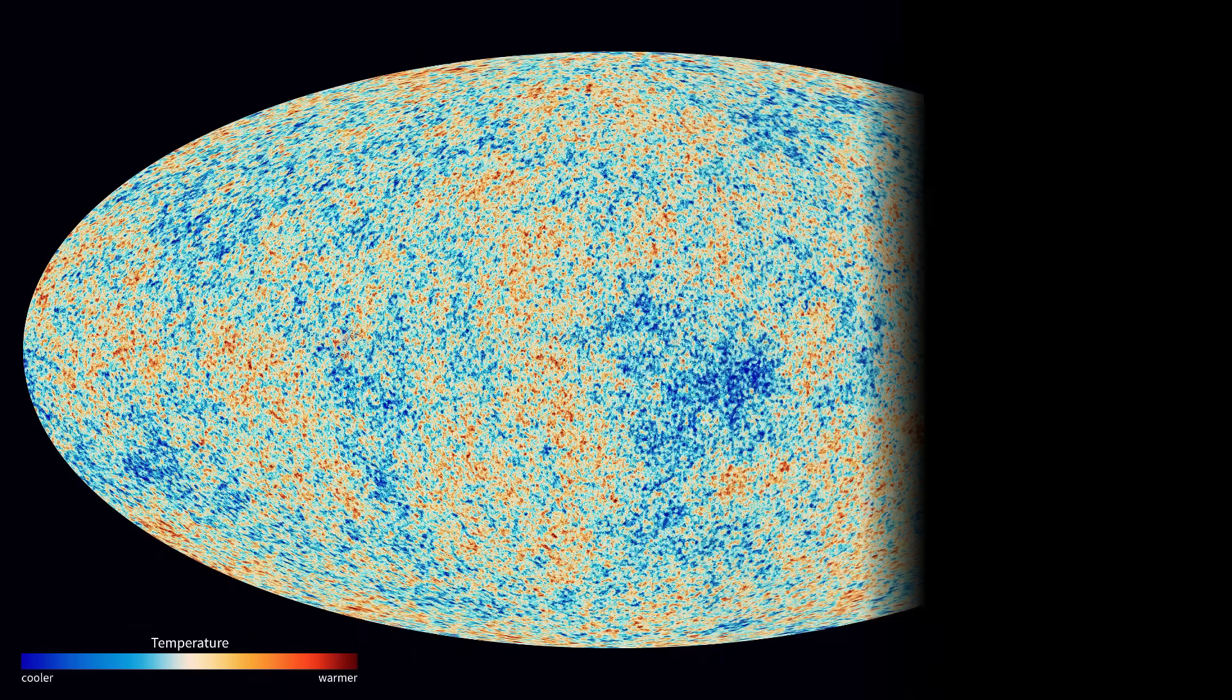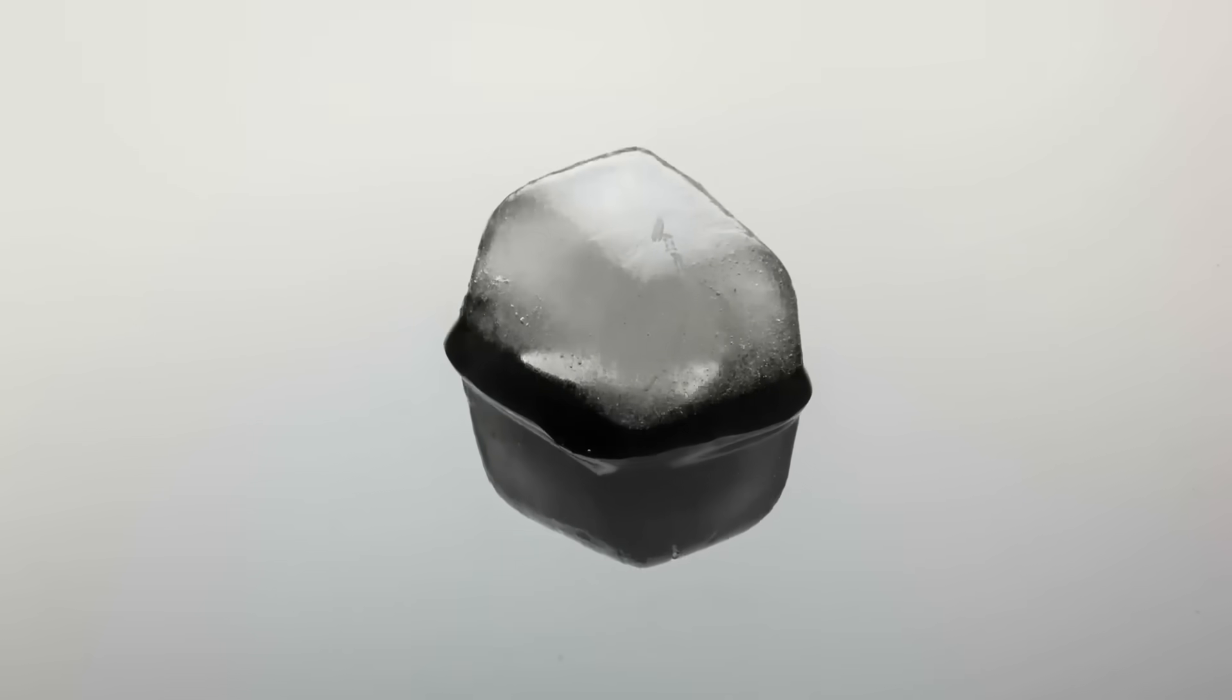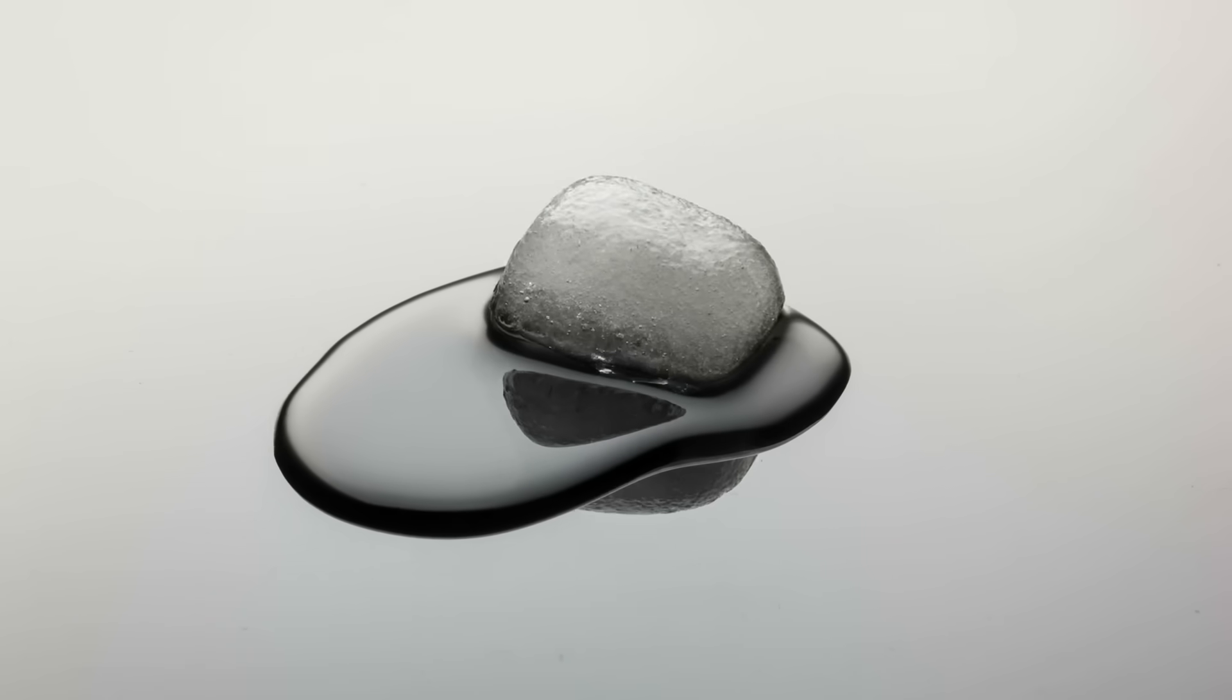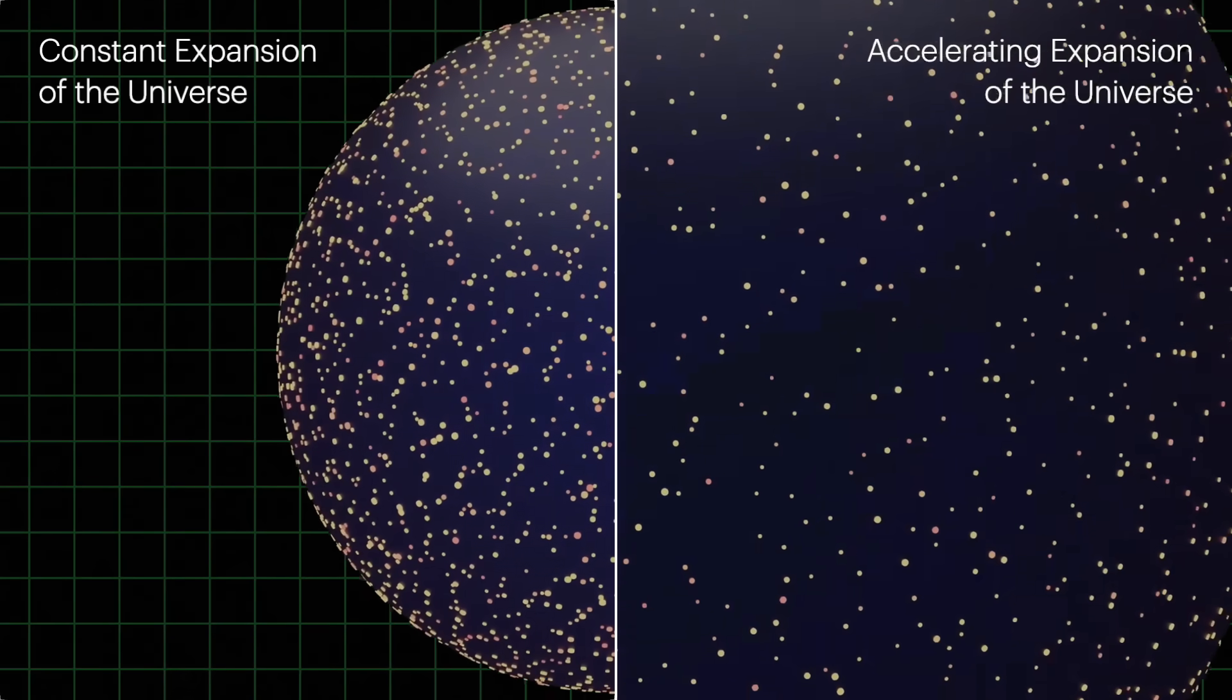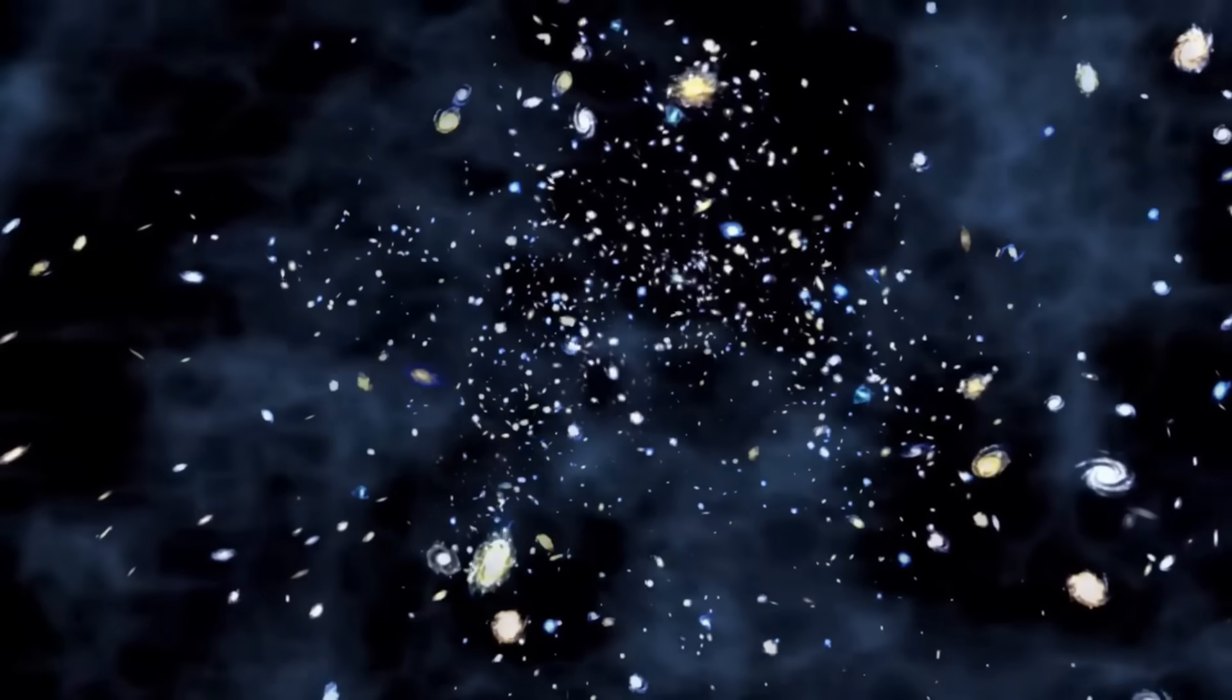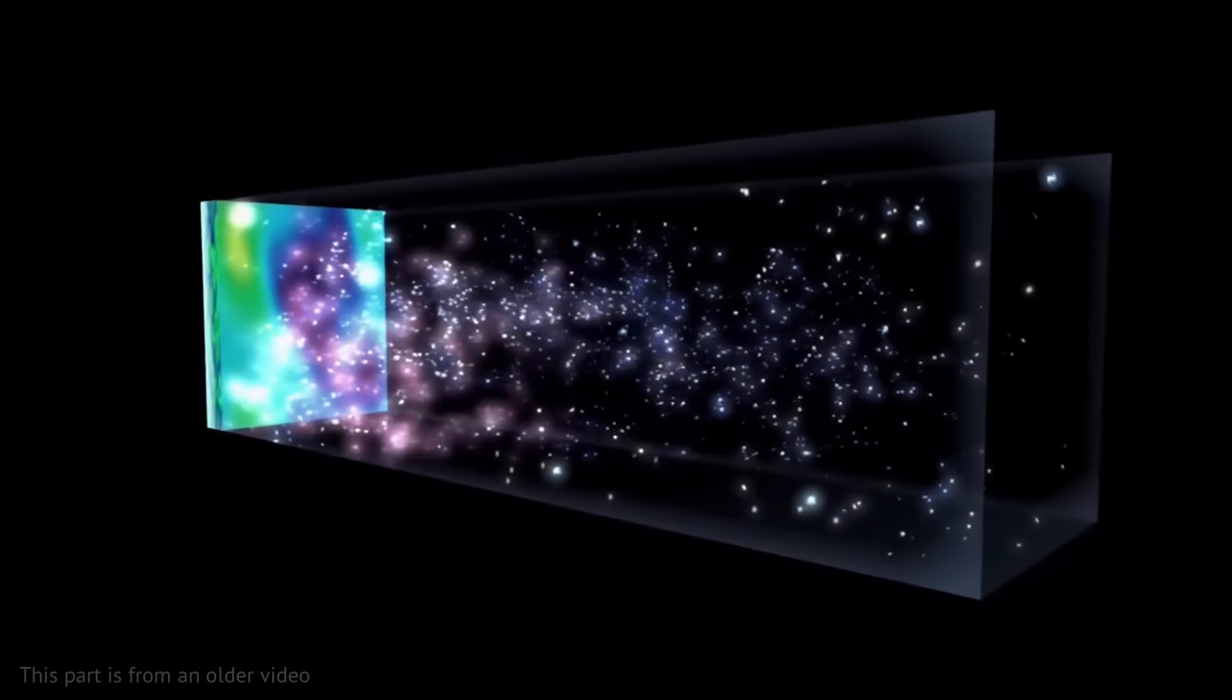The scientists also tackled the mystery of why the universe appears flat and uniform on large scales. They explained this using the concept of entropy, which helps describe how likely certain configurations are. They discovered that a flat, rapidly expanding universe with a small positive acceleration is the most probable state. Additionally, they showed that density variations, usually linked to inflation, could actually be explained through quantum fields.